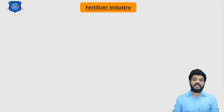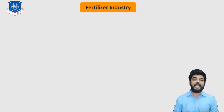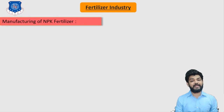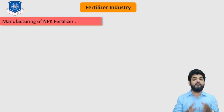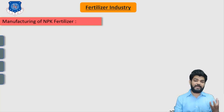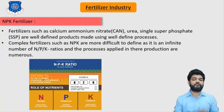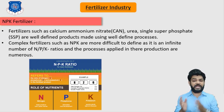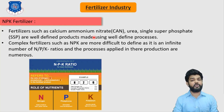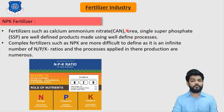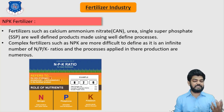Today's session topic is the NPK fertilizer, which is a very important concept for the exam. The production of trade fertilizers such as calcium ammonium nitrate (CAN), urea, or single super phosphate (SSP) are very well established processes, and they are simple or well-defined products.